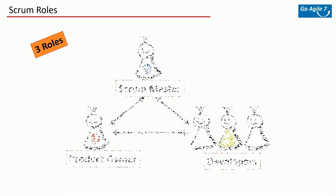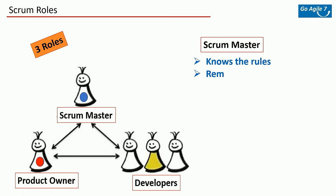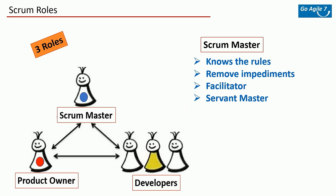In Scrum there are only three types of roles: Product Owner, Scrum Master, and Developers. The Scrum Master knows all the rules of the game and closely monitors any impediments — blockers. To remove impediments they coordinate with other teams and departments like legal, finance, and admin, as well as release management and external business stakeholders. Scrum Masters facilitate any required meetings and are like the spokesperson for the team.